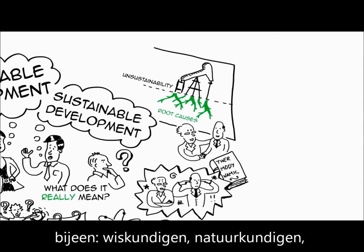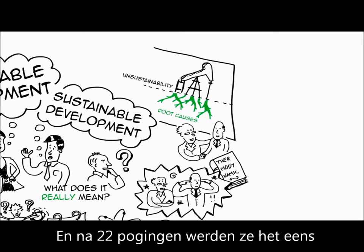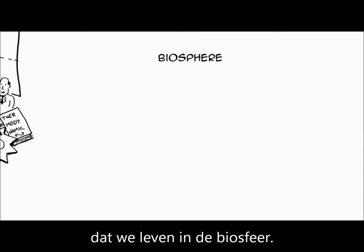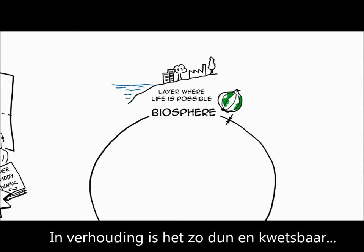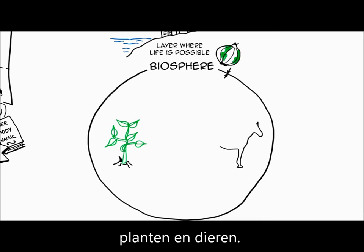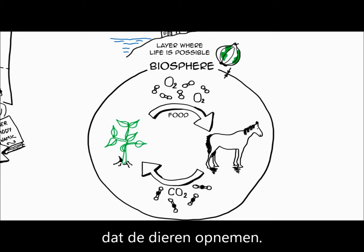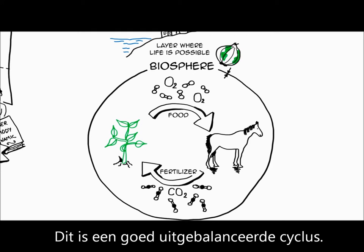He put together a group of 50 scientists, mathematicians, physicists, chemists, etc. And after 22 drafts, they agreed on several things. First, they agreed on the fact that we live in the biosphere — this very thin layer at the surface of the earth where life is possible. Proportionally speaking, it's as thin and fragile as the skin on an onion. And within this biosphere, there are plants and animals. Plants produce oxygen and food, which are consumed by the animals.